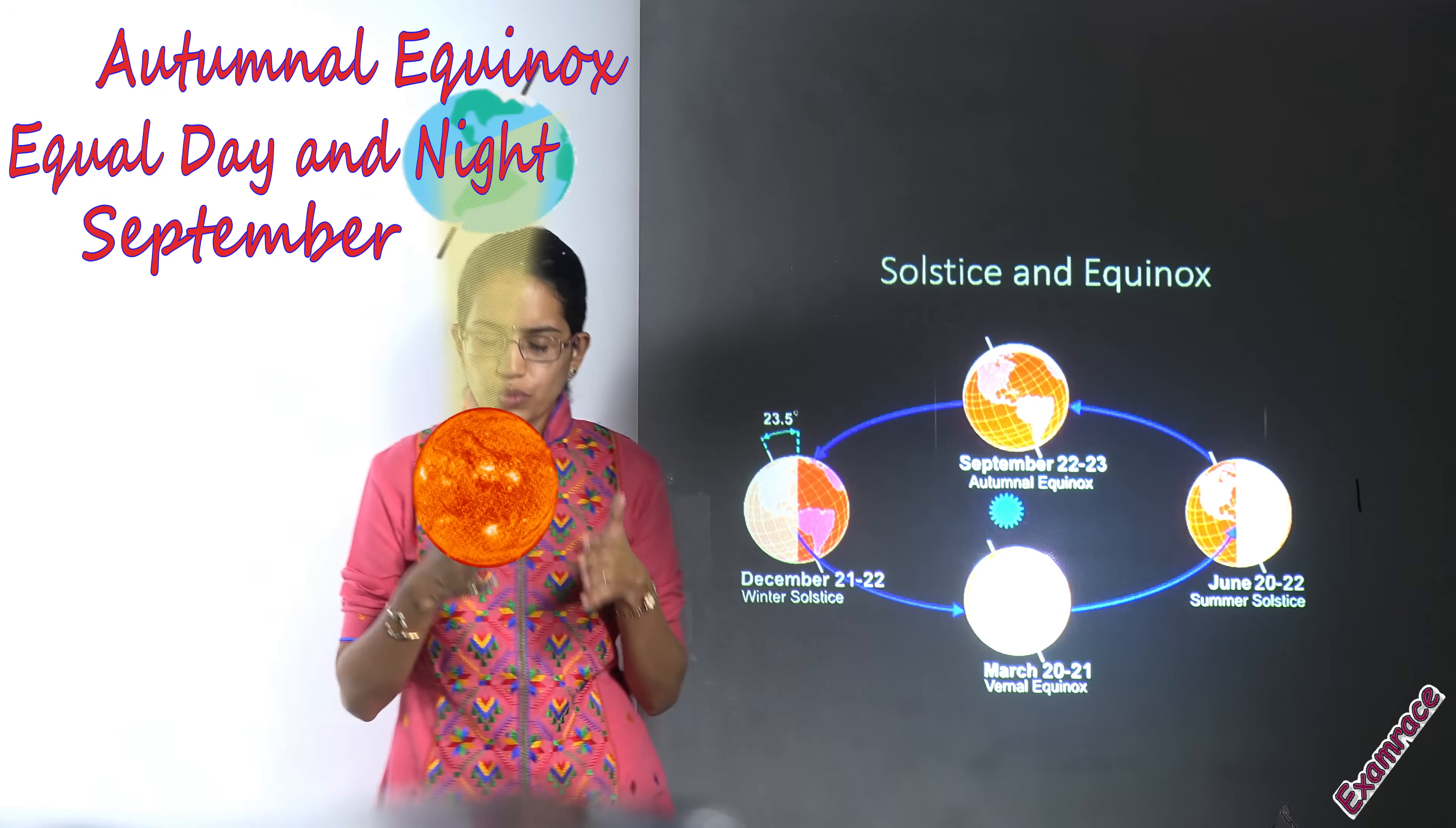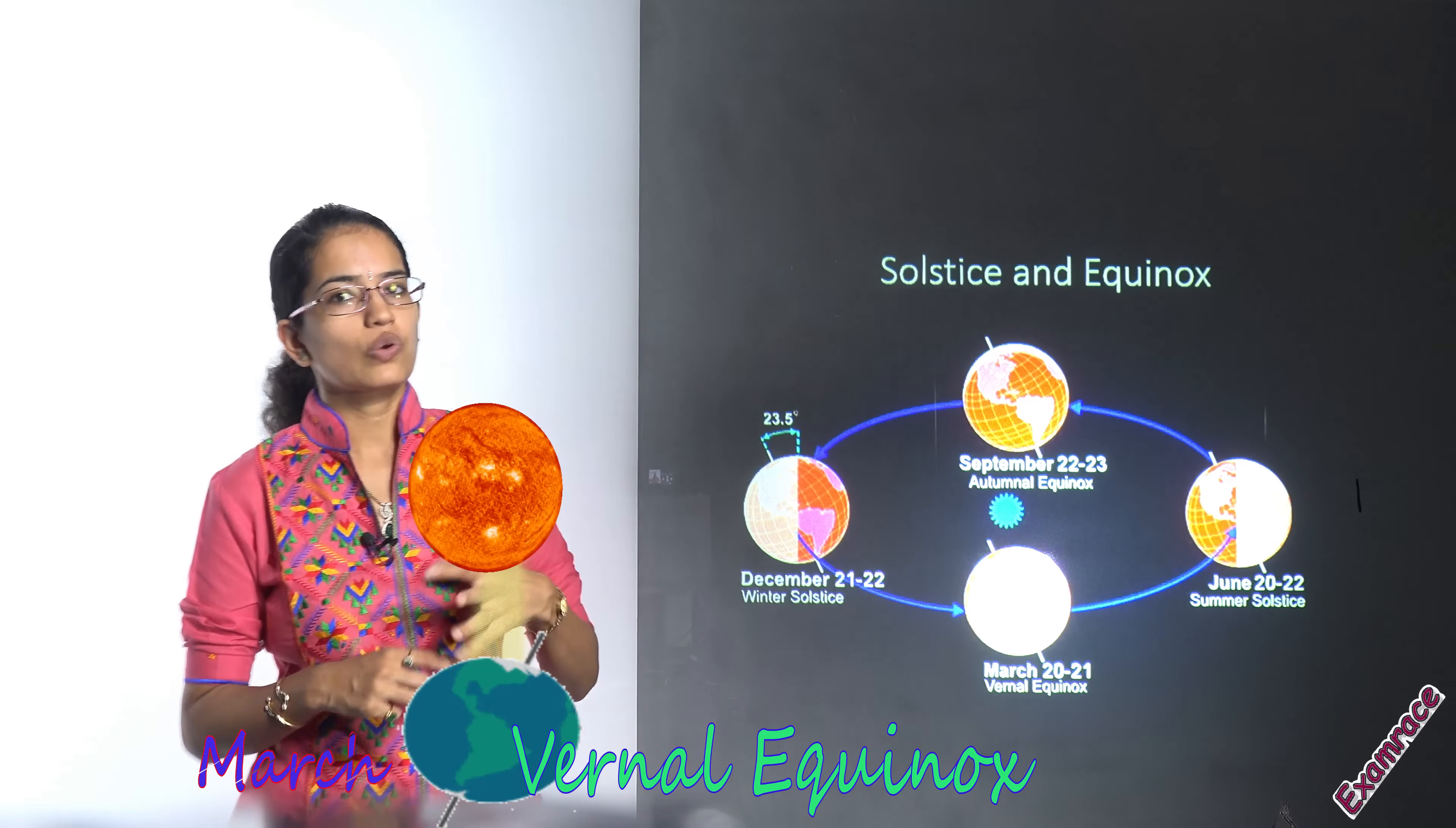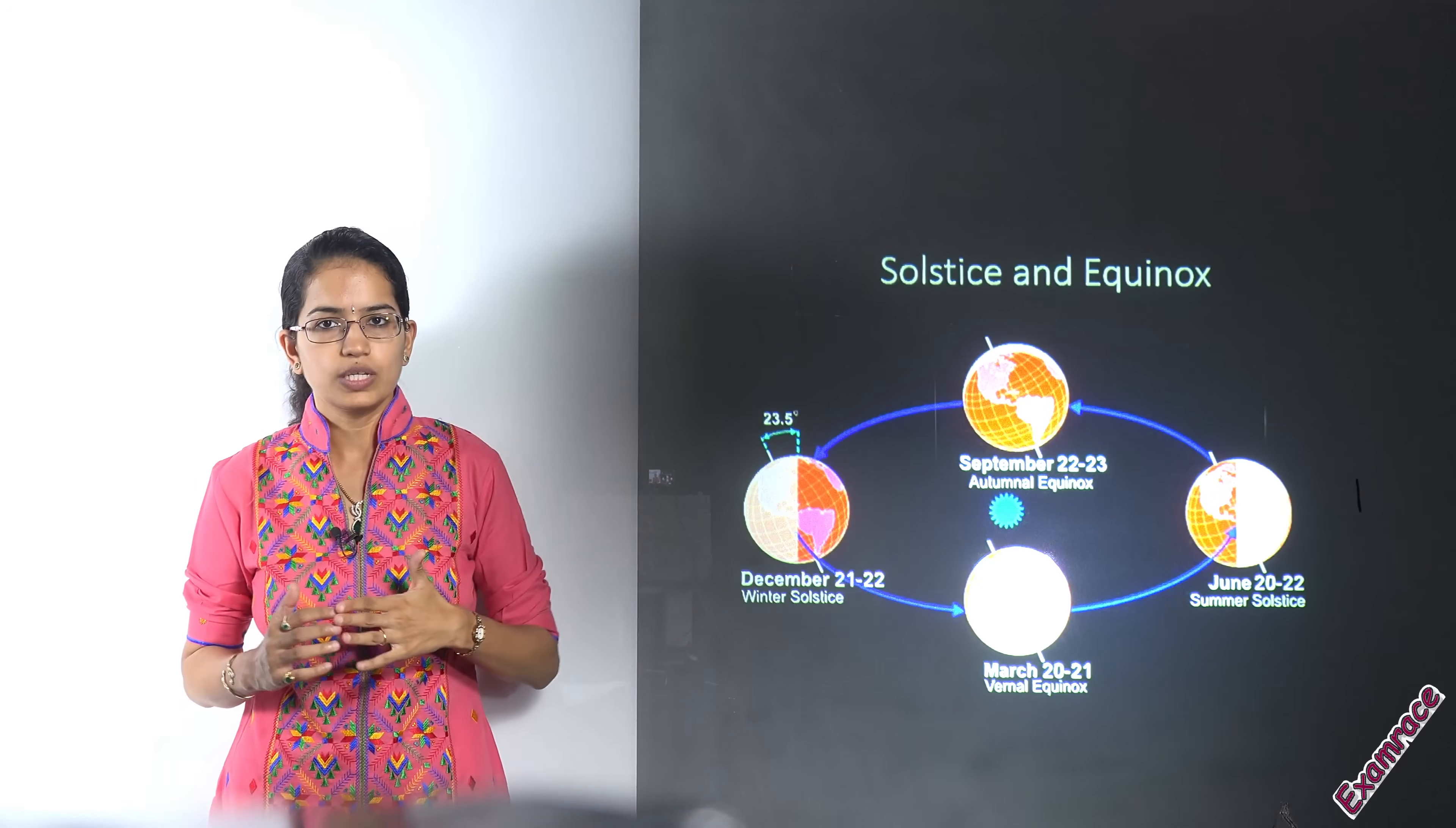And on the other hand, in March you would have vernal equinox that occurs around 21st of March, where you have again equal days and equal nights. So at equinoxes you would have equal days and equal nights.